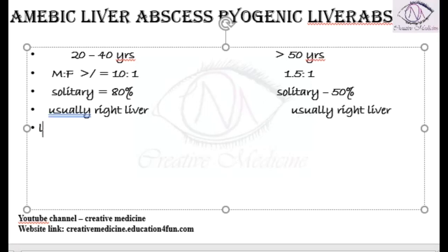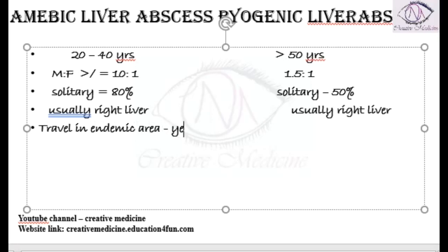A history of travel in endemic areas has a role in amoebic liver abscess, but travel history does not have any role in pyogenic liver abscess.